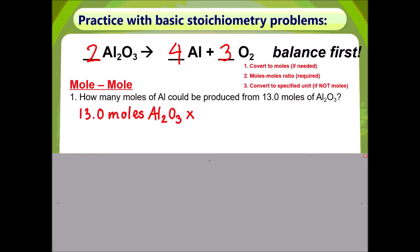We must always start by writing down the given, which is 13.0 moles of aluminum oxide. Step 1 says convert to moles if needed. Our given is already in moles, therefore we don't need to convert.